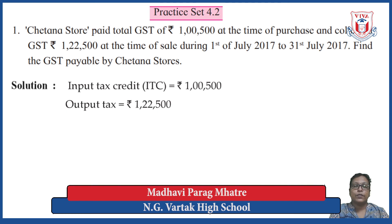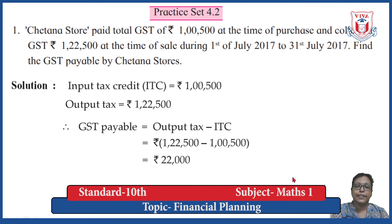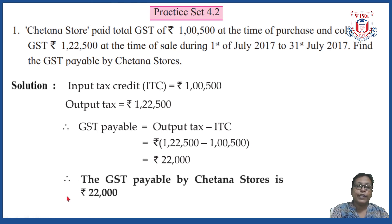GST payable equals output tax minus ITC, so rupees 1,22,500 minus rupees 1,05,000 equals rupees 22,000. Therefore, the GST payable by Chetna Stores is rupees 22,000. Don't forget to write down the final answer in words.